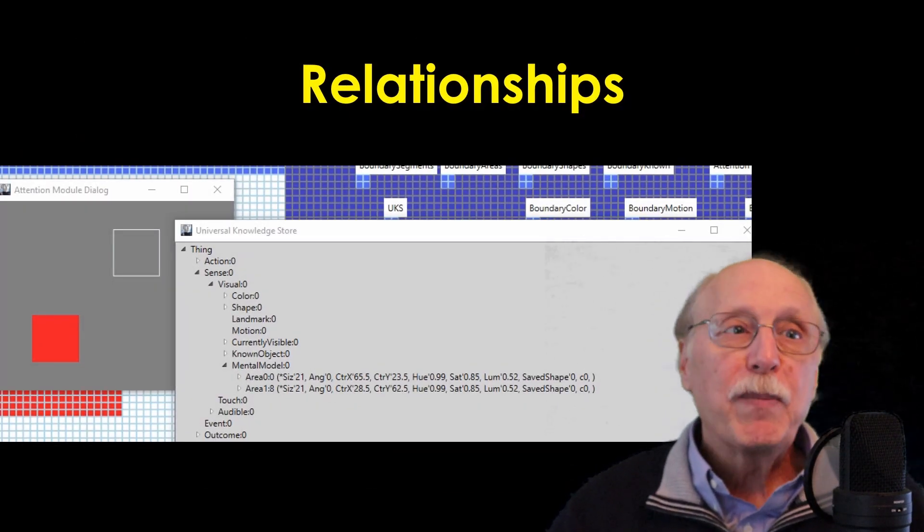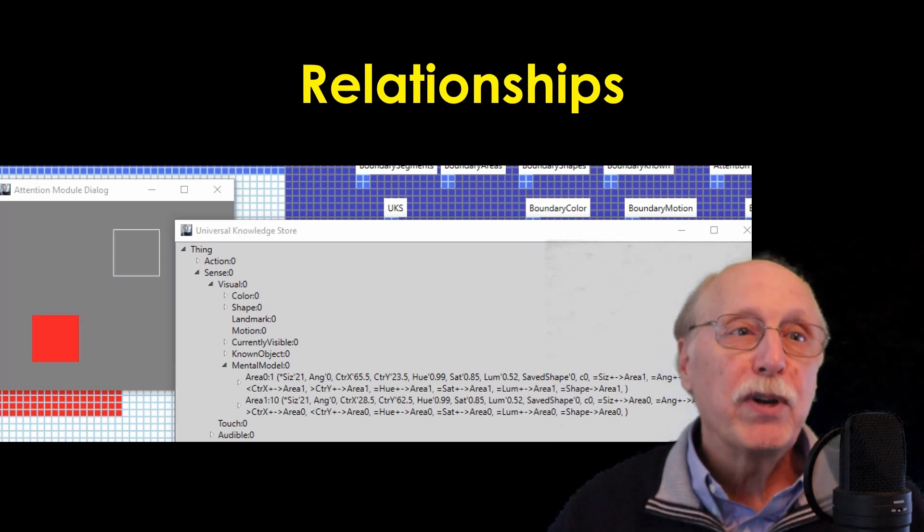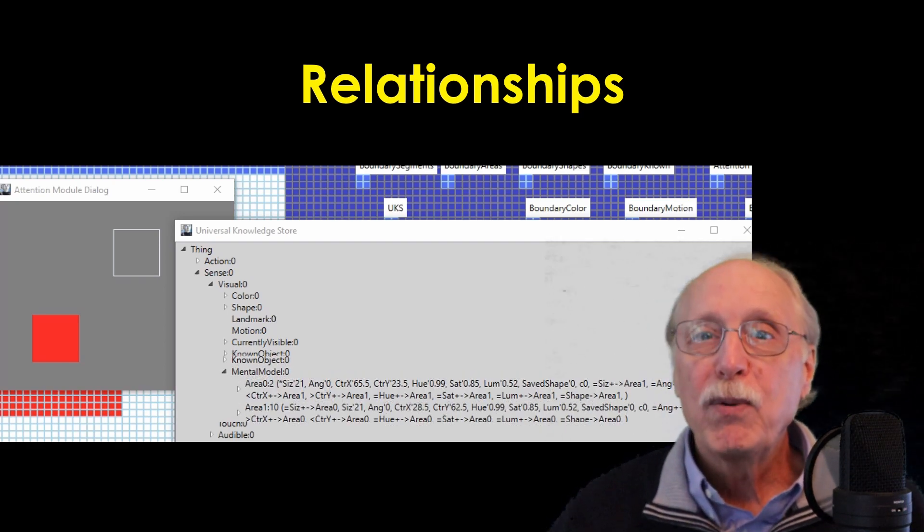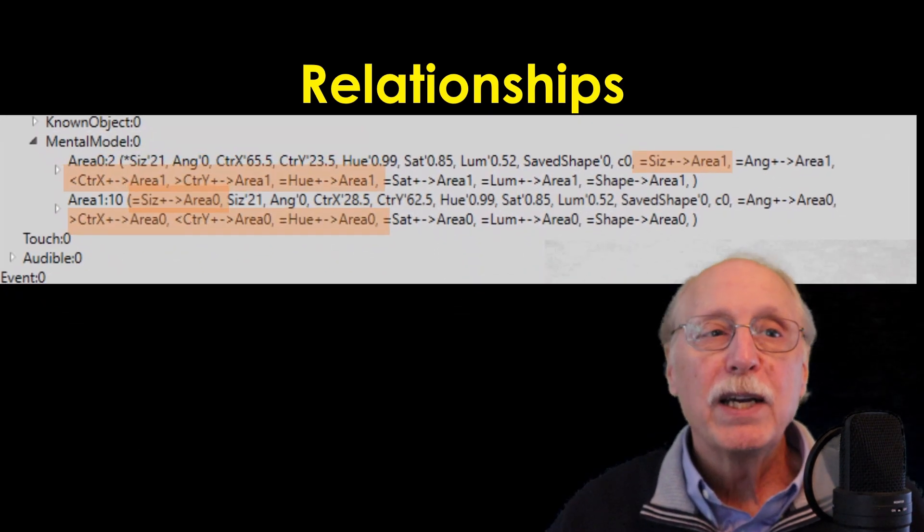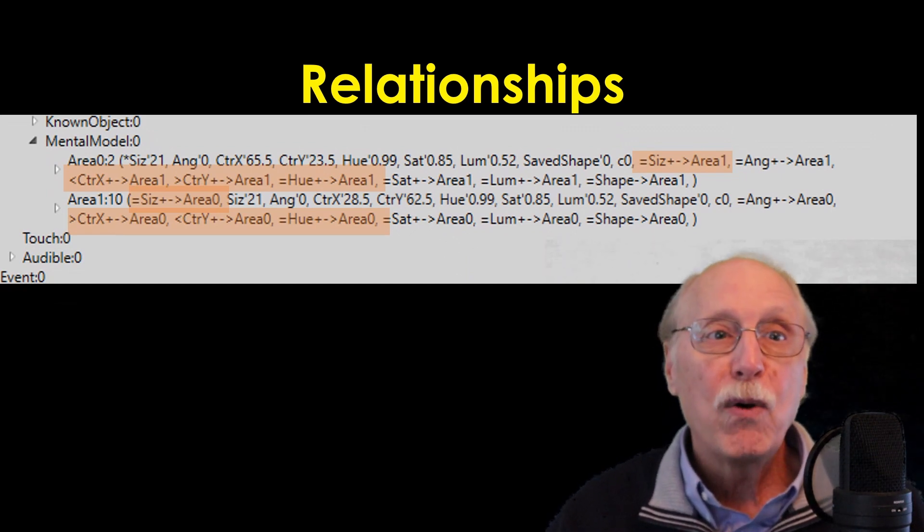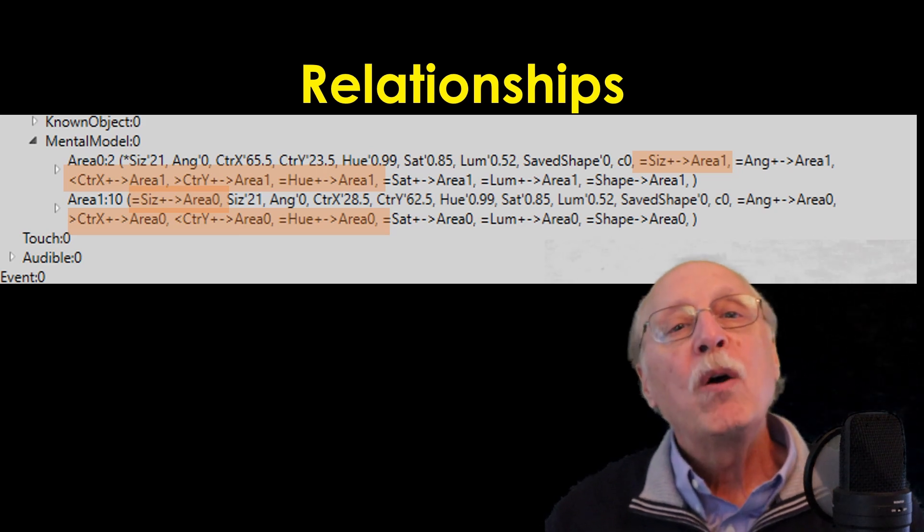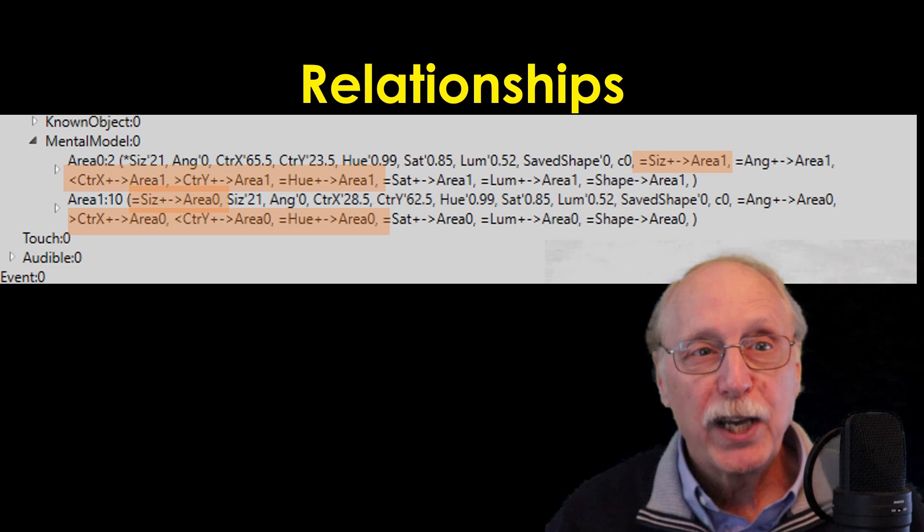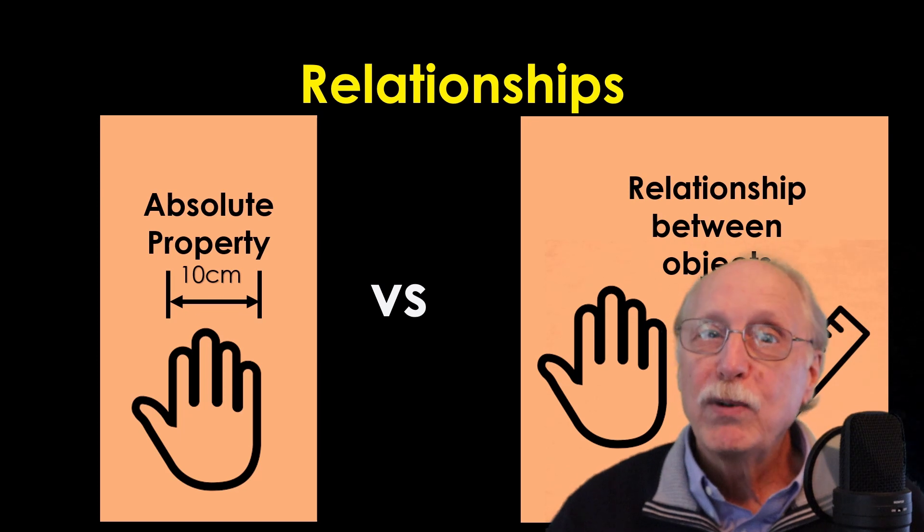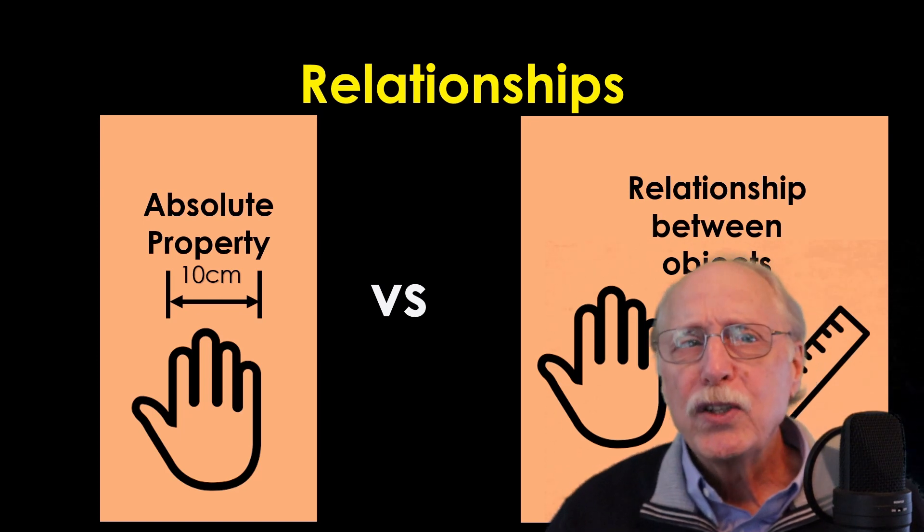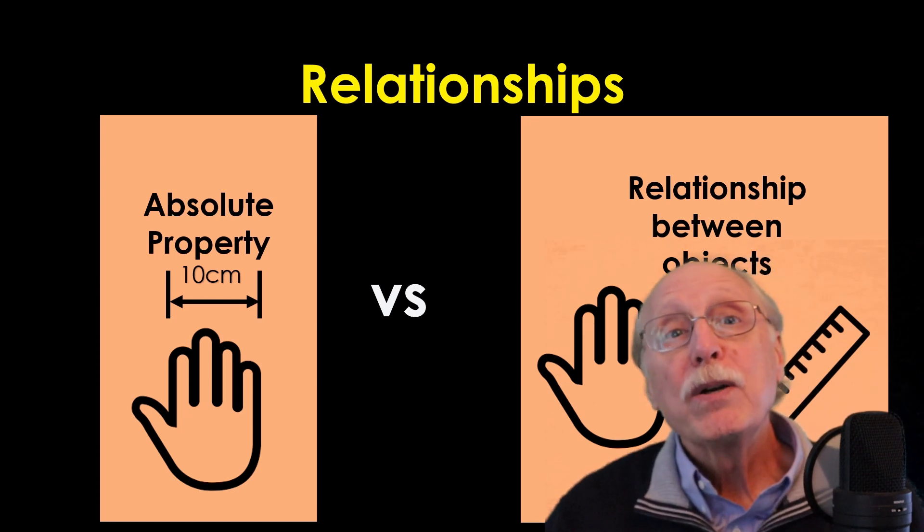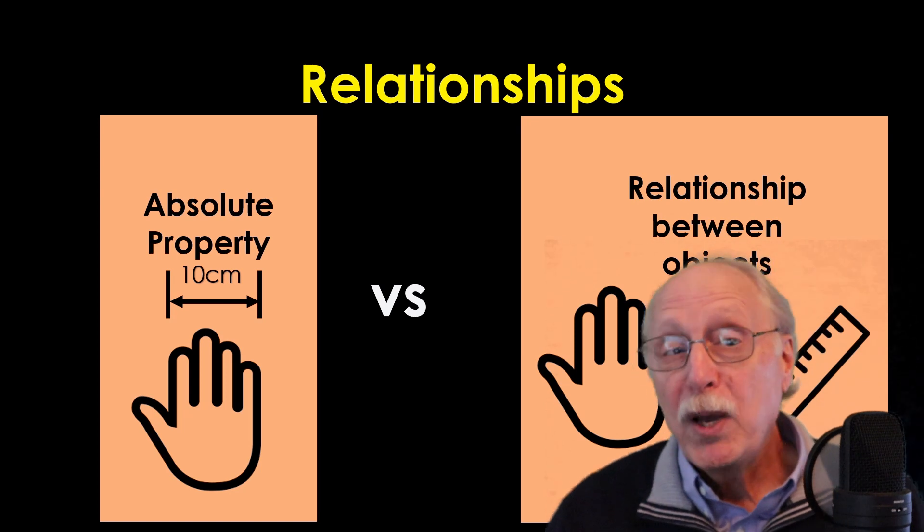Relationships: This step compares the current object of attention with the previous object of attention and builds relationship links for all the comparable properties. Here you can see how the UKS represents the knowledge that area 0 is to the left and below of area 1, while they are the same color and the same size. Relationships are likely the most important data mechanism in general intelligence. Your brain doesn't know how big anything is in absolute terms. It only knows that it is bigger, smaller, or about the same as some other things.